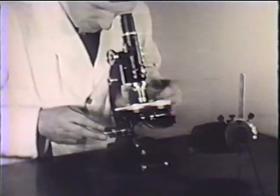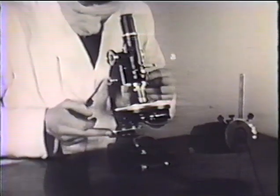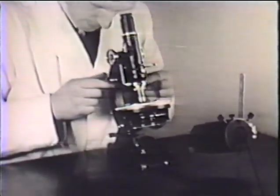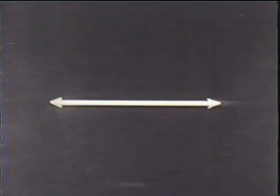Up to this point we've not used the polarizing equipment. We'll now swing the polarizer into position. The field is now illuminated with light vibrating east and west.